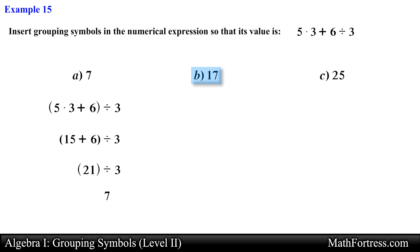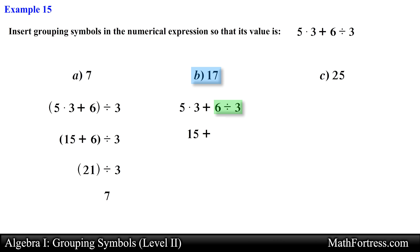For b), to obtain 17 from this expression, notice that we don't actually need to write any grouping symbols — we just follow the rules for simplifying without grouping symbols. We first take care of 5 times 3 which simplifies to 15, and then 6 divided by 3 which simplifies to 2. So 15 plus 2 gives us 17, with no grouping symbols needed.